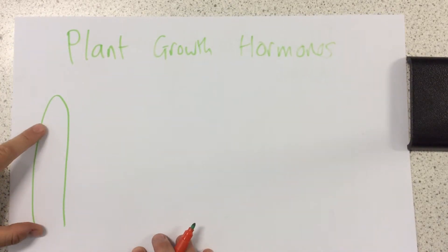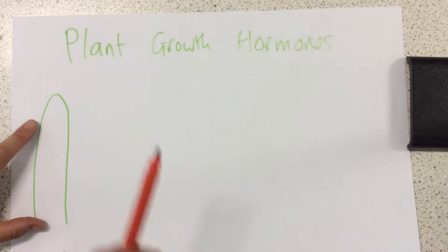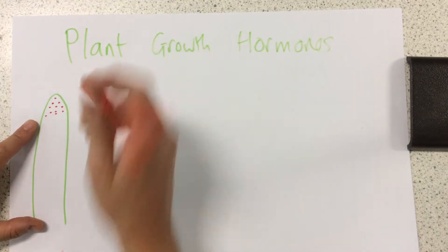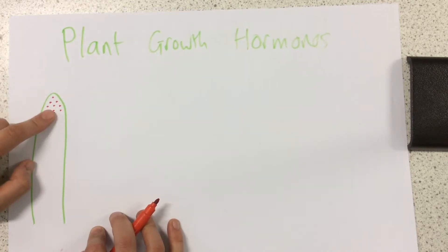So in the shoot of a plant, the auxins are made near the tip. Now these auxins, these hormones, are just chemical messengers that allow the shoot to grow. So they encourage growth.